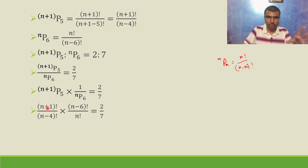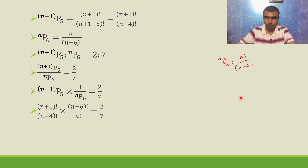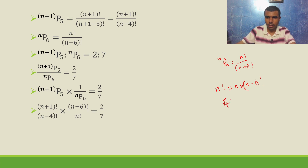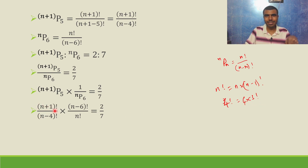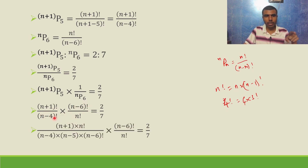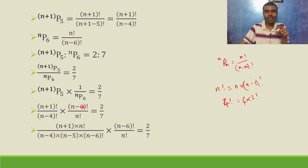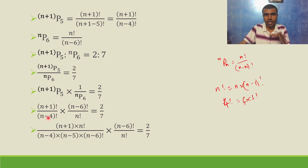Here I have (n+1) factorial and n factorial. (n+1) factorial can be written as (n+1) into n factorial, using the property that n factorial equals n into (n-1) factorial — for example, 4 factorial is 4 into 3 factorial. Also, (n-4) factorial can be written as (n-4) into (n-5) into (n-6) factorial, so that n-6 factorial cancels with the n-6 factorial from the reciprocal, and n factorial cancels too.